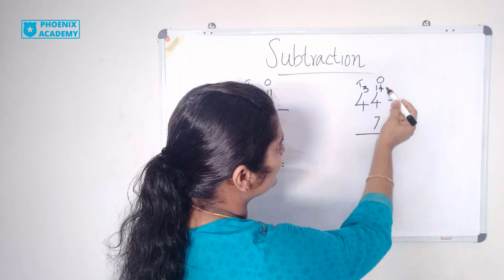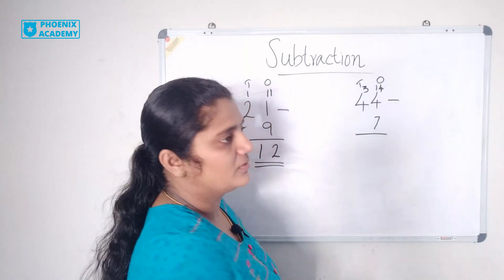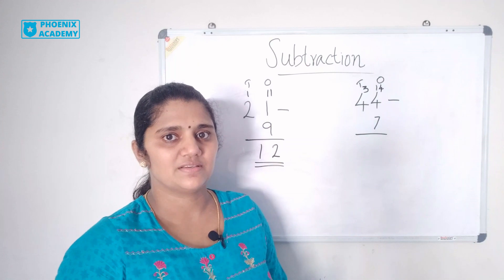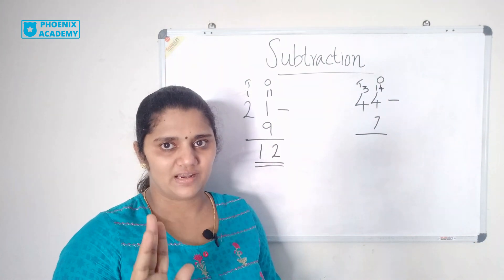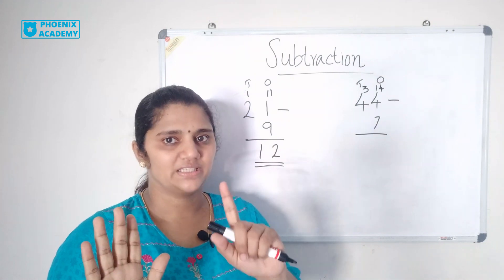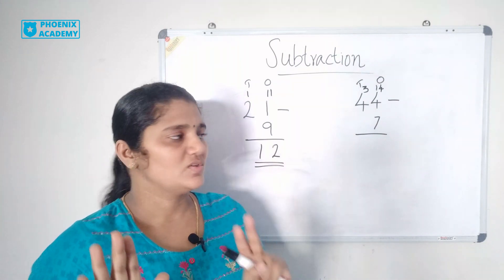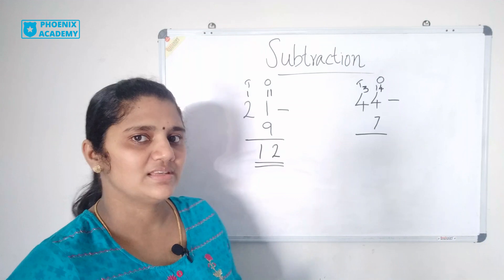Now subtract 14 minus 7. 14 minus 7 is 8, 9, 10, 11, 12, 13, 14. So 14 minus 7 is 7.